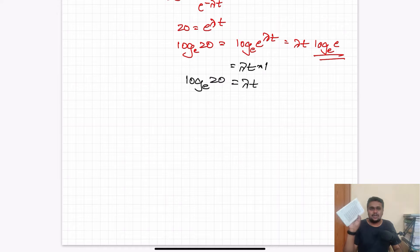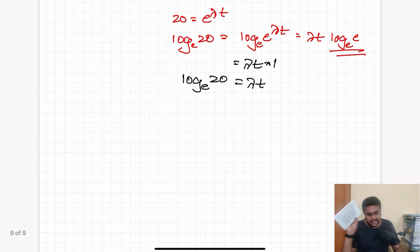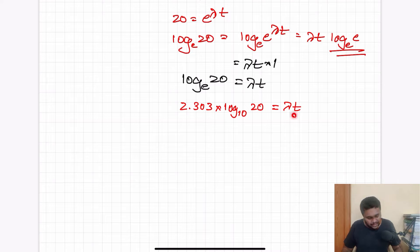You have logarithmic book, Clark's table, that is to the base 10, not to the base e. So base e will be converted to base 10, for which I have to multiply it with 2.303 into log to the base 10 of 20. Log 20 to the base e is equal to lambda t. 1.3010 is the logarithmic value of log 20 to the base 10. Into 2.303 is equal to lambda t.